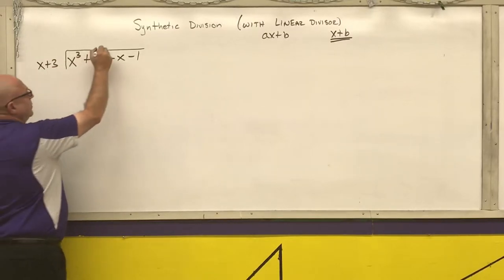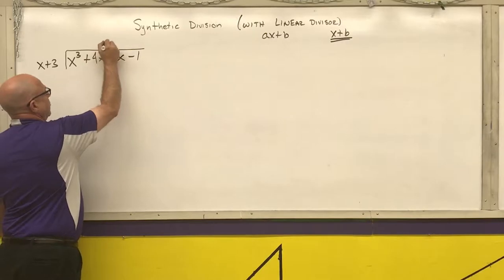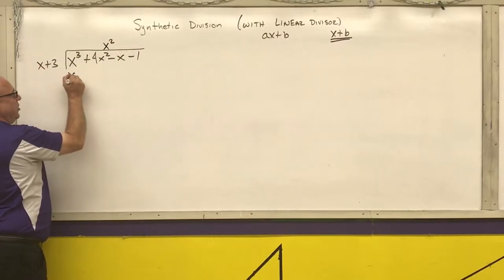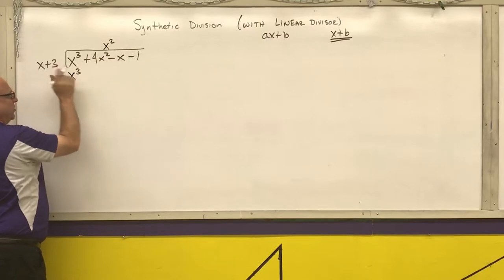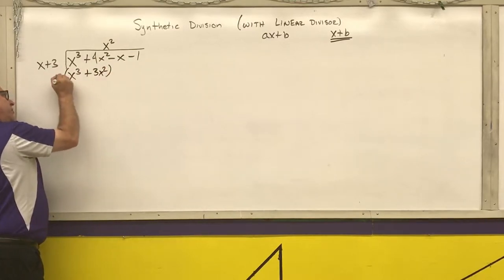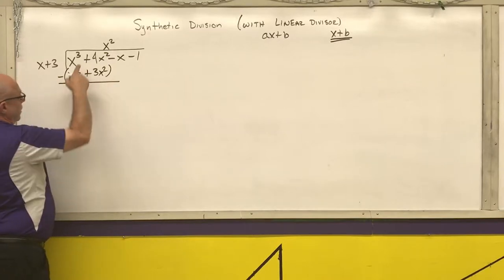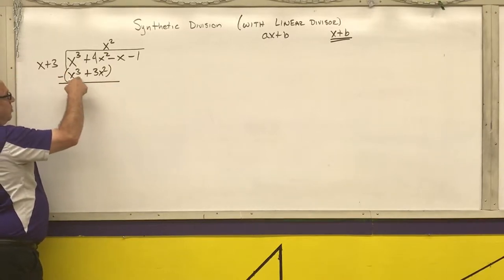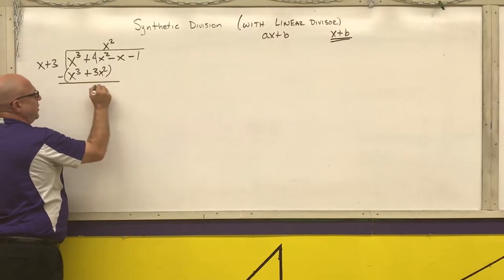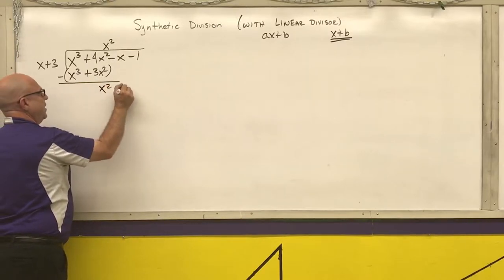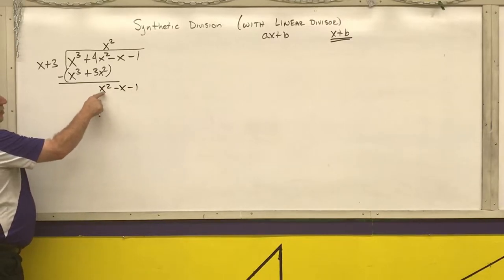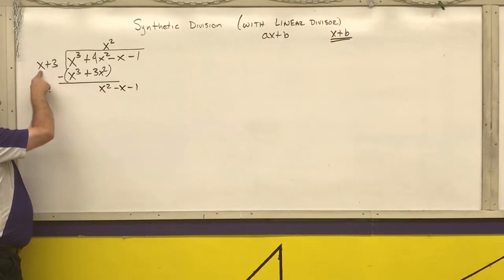Leading term over leading term: x cubed divided by x is x squared. Then I multiply — x squared times x is x cubed, x squared times 3 is 3x squared. Parentheses around both terms and subtract. Any number minus itself is zero. 4 minus 3 is 1 — this is one of my x squared terms. Bring down the rest of the terms. Leading term over leading term.